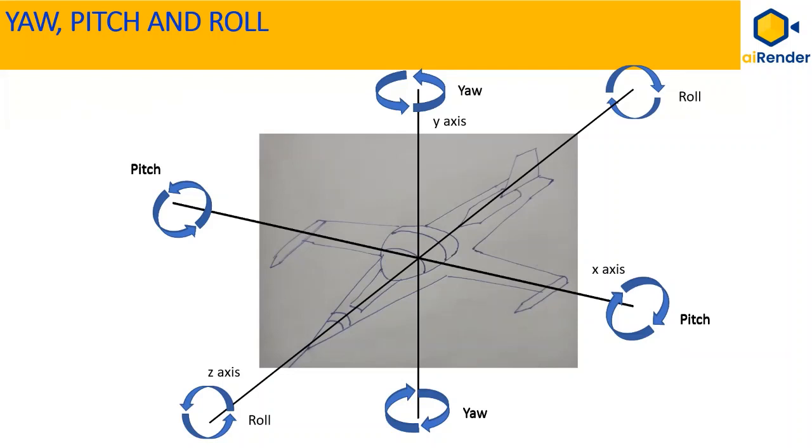The rotation about the Y axis in the X, Z plane is called yaw. And the rotation about the X axis in the Y, Z plane is known as pitch. And finally, the rotation about the Z axis and in the X, Y plane is known as roll.